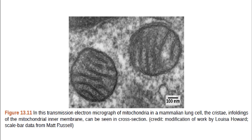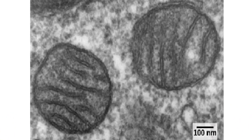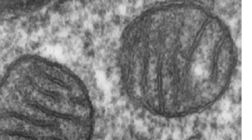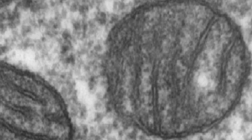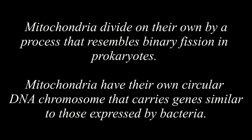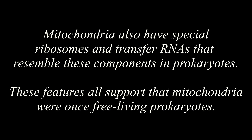The mitochondrial inner membrane involves substantial infoldings or cristae that resemble the textured outer surface of certain bacteria. Figure 13.11 shows a transmission electron micrograph of mitochondria in a mammalian lung cell, where the cristae, or infoldings of the mitochondrial inner membrane, can be seen in cross-section. Mitochondria divide on their own by a process that resembles binary fission in prokaryotes. Mitochondria have their own circular DNA chromosome that carries genes similar to those expressed by bacteria, and also have special ribosomes and transfer RNAs that resemble these components in prokaryotes. These features all support that mitochondria were once free-living prokaryotes.